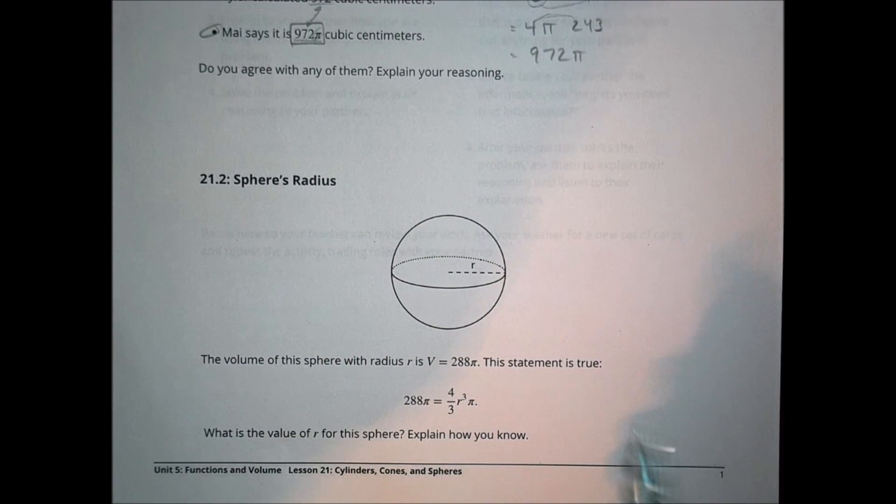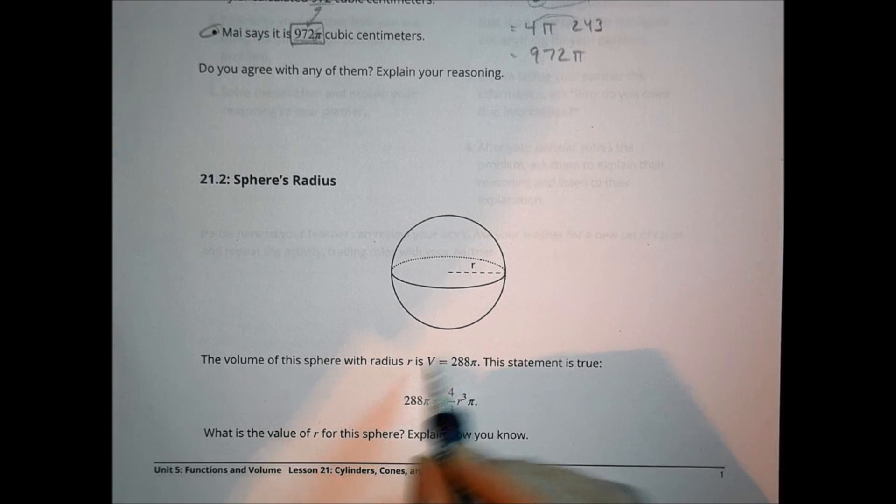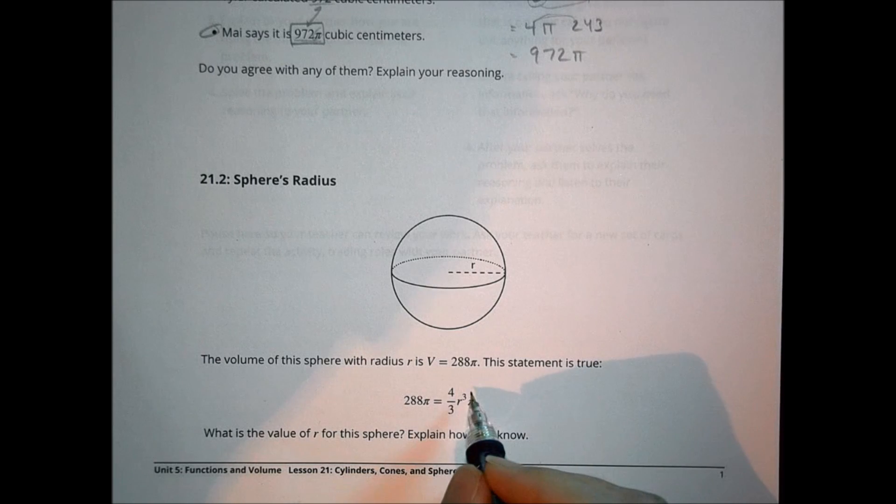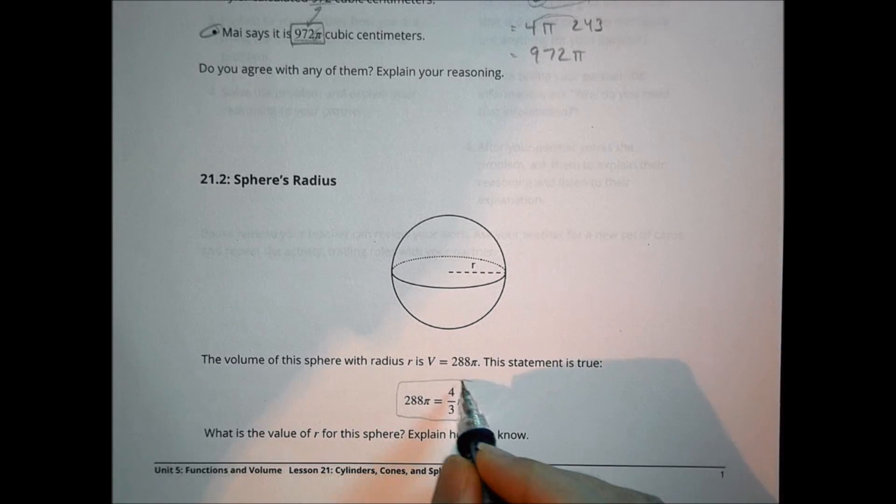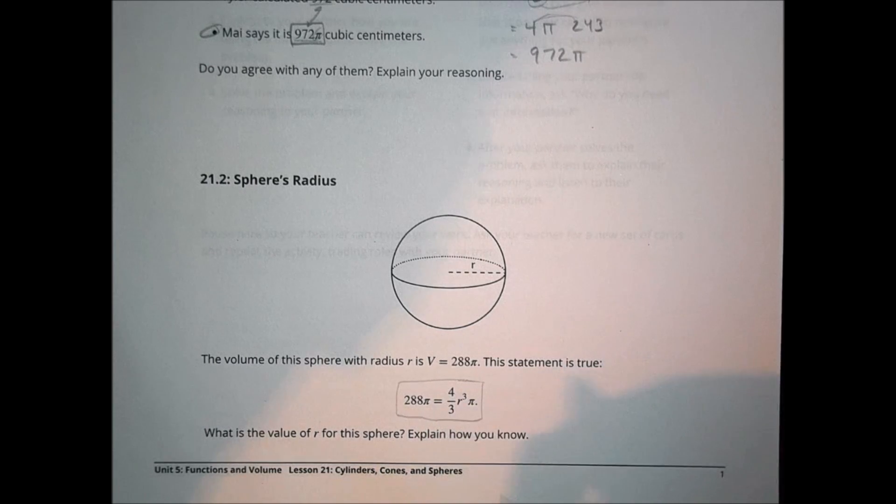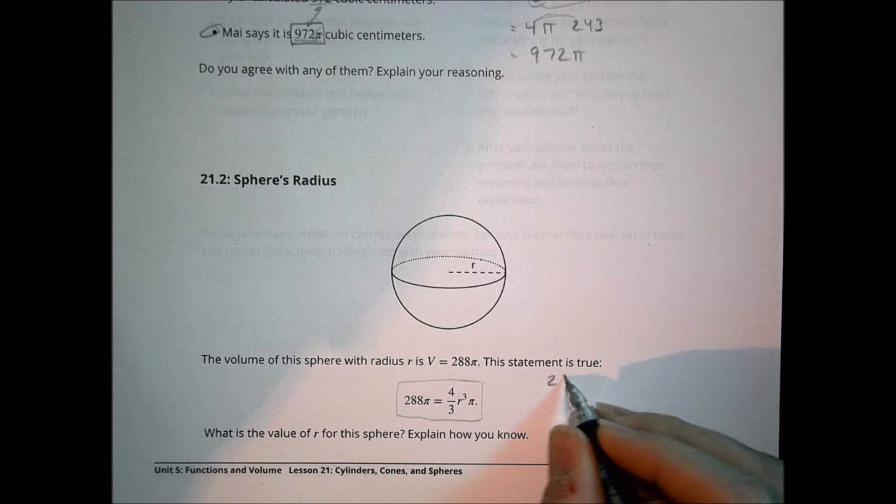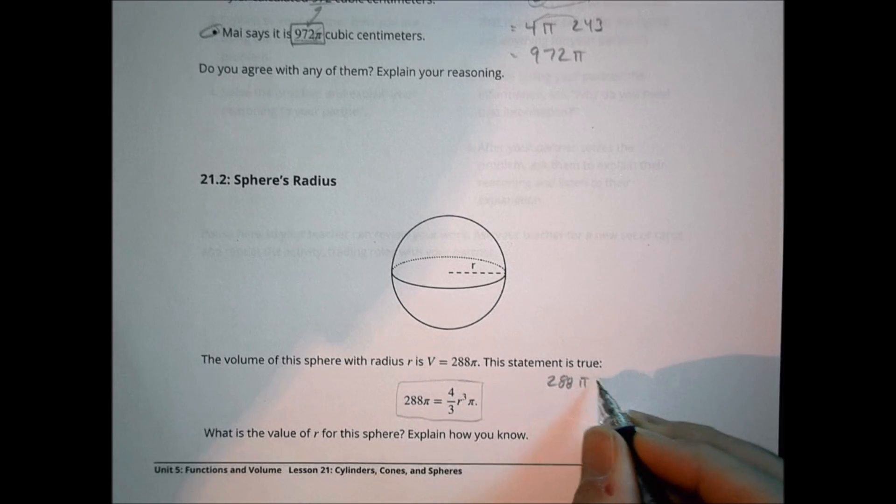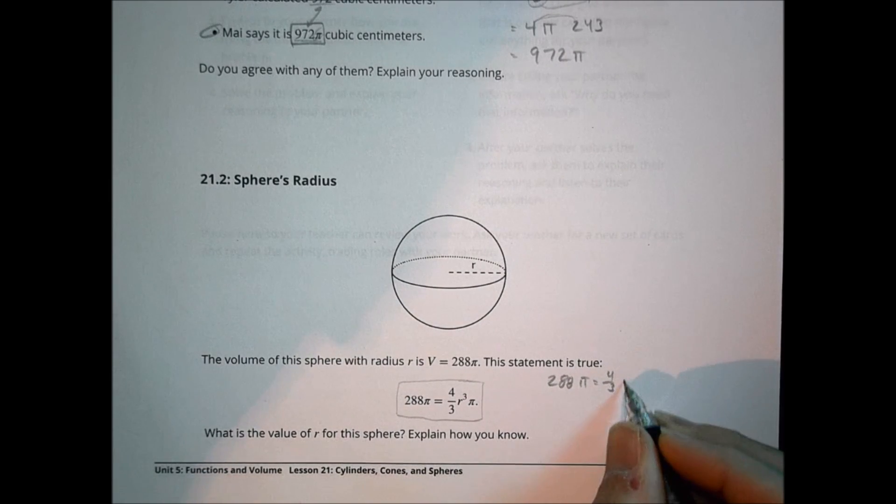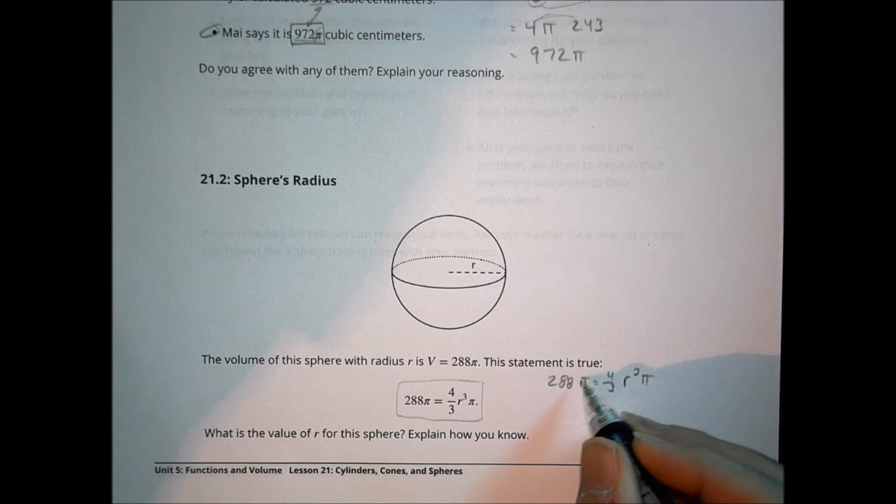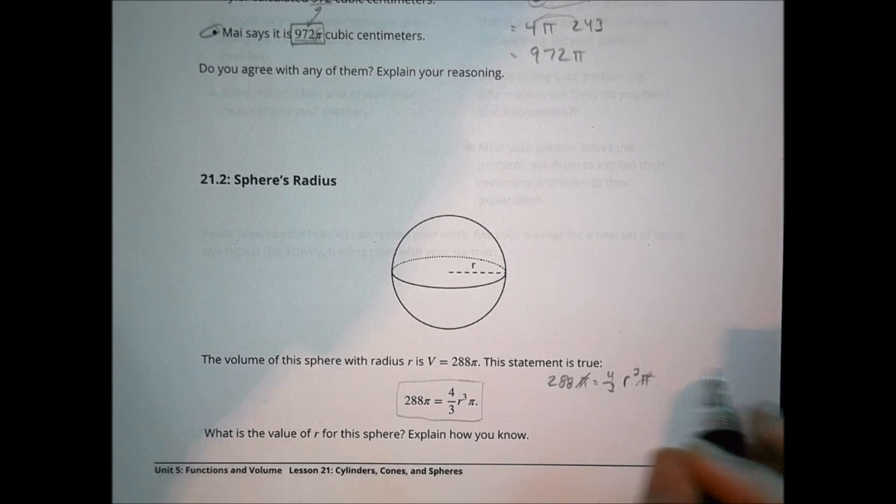Next. We have the sphere's radius. The volume of the sphere of the radius r is v equals 288. That's the volume of the whole thing. This statement is true. 288 pi equals 4 thirds r to the third pi. So, what is the value of r? Let's solve this to see if we can figure it out. We have 288 pi equals 4 thirds r to the third pi. One thing I can do, since there are pi on both sides, is I can eliminate the pi's.